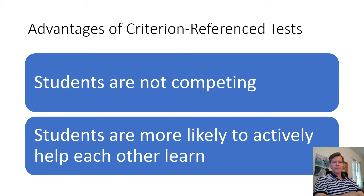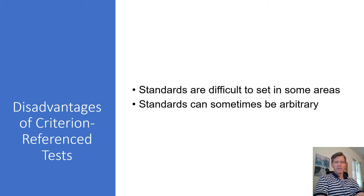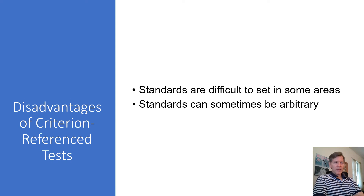There are some advantages to criterion-referenced tests. Students are not competing against each other — this is benchmark testing, not seeing who measures against whom. Potentially everyone can meet the criteria and everyone can earn an A. That means students are more likely to help each other in a learning community. Some disadvantages: it can be difficult to set standards in areas like language arts and writing, especially for creativity. And if a teacher is making a criterion-referenced test, it can be a bit arbitrary — though established CBMs have been normed and are not arbitrary, unlike a teacher-made test.